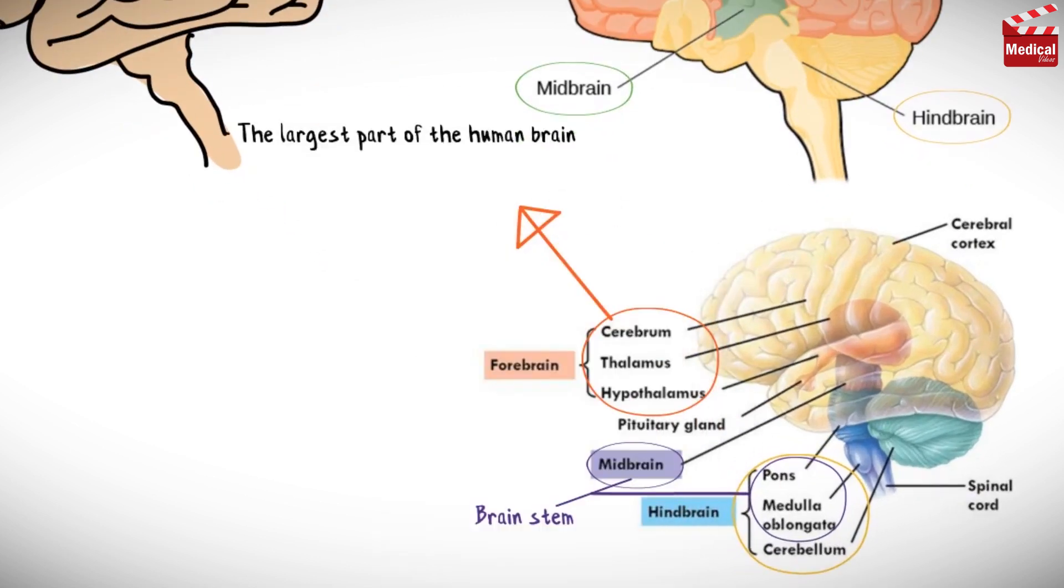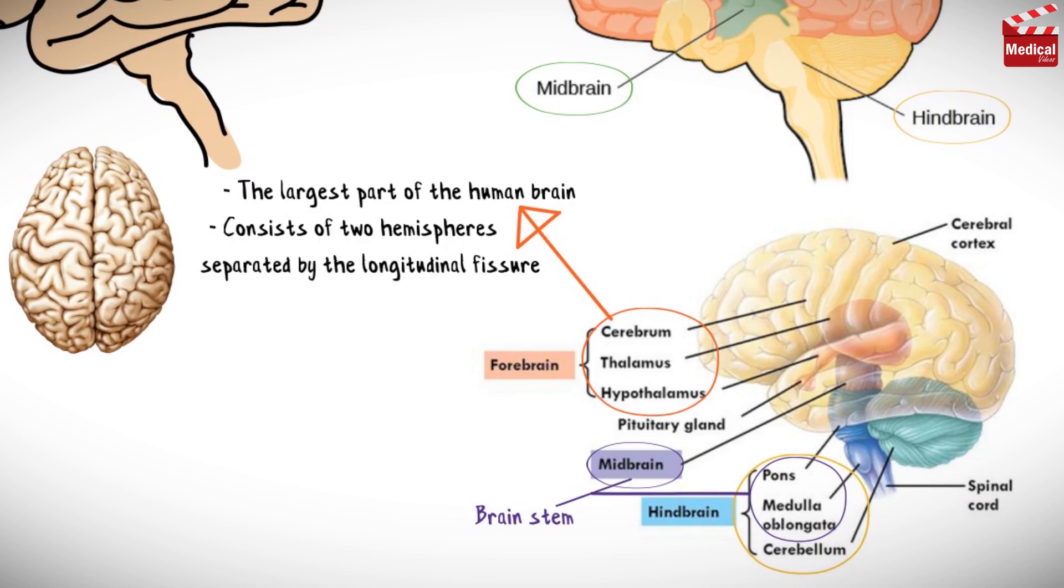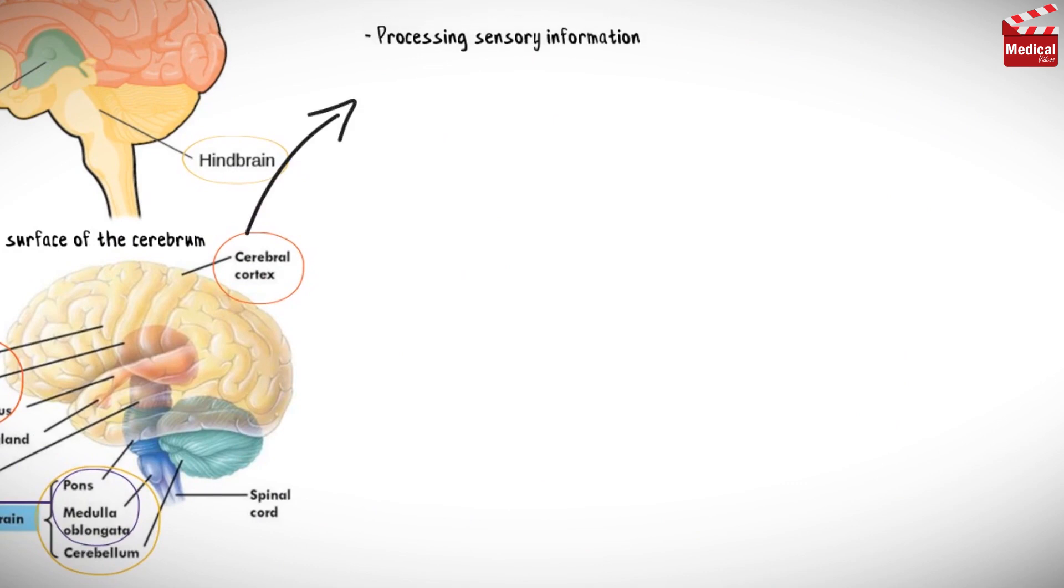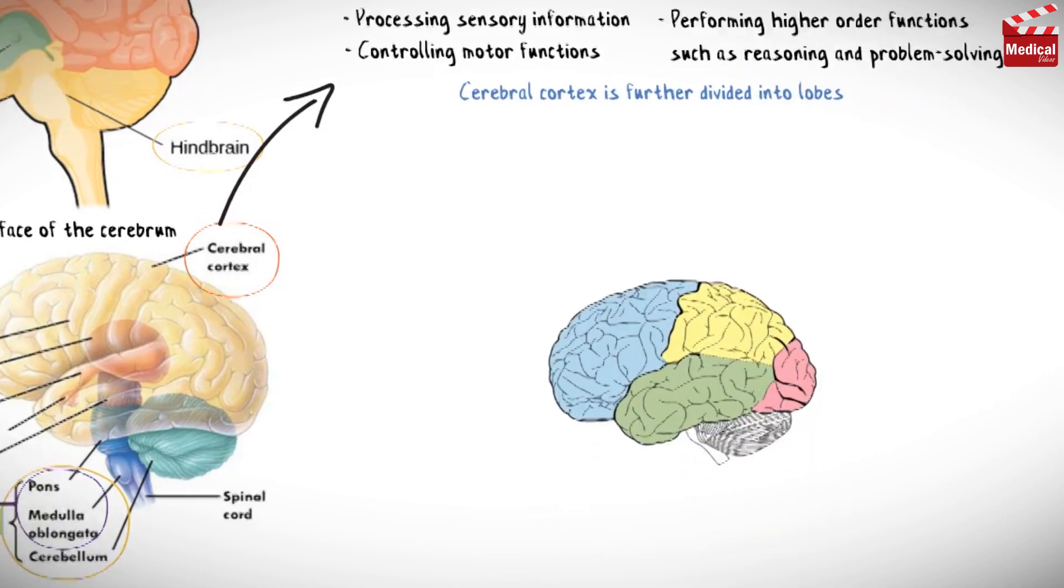The largest part of the human brain is the cerebrum, which consists of two hemispheres separated by the longitudinal fissure. The surface of the cerebrum is called the cerebral cortex. It works in processing sensory information, controlling motor functions, and performing higher order functions such as reasoning and problem solving. The cerebral cortex is further divided into lobes.